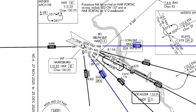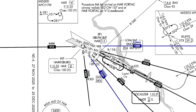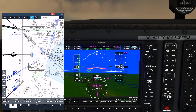The answer has to do with descent angles. On an initial approach segment, the optimum descent gradient is 250 feet per nautical mile, with a max gradient of 500 feet per nautical mile. On Victor 12, the MEA is 5400 feet. Even if we're flying at that minimum altitude, once we cross the Harrisburg VOR we have just 3.5 miles to descend 3000 feet before reaching Cebu, the intermediate fix.